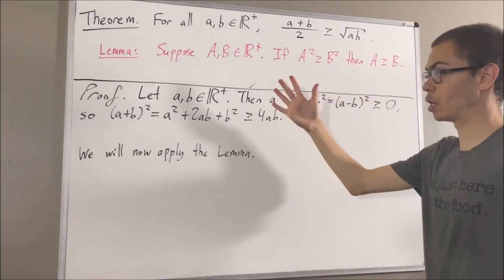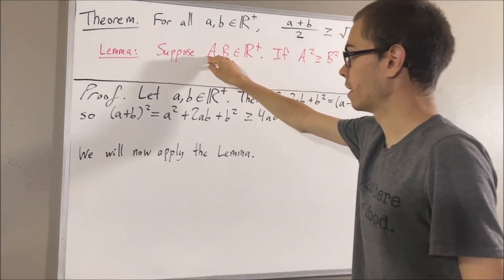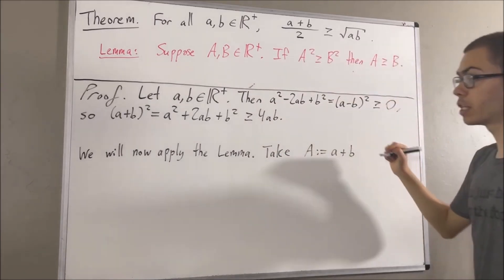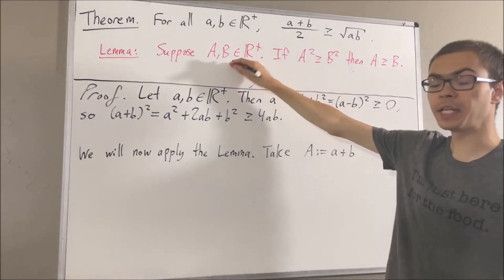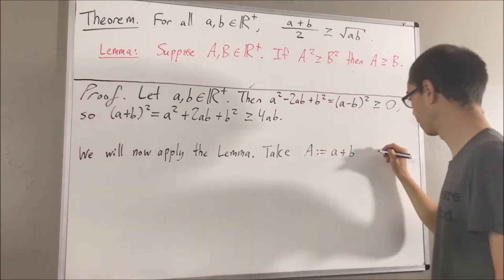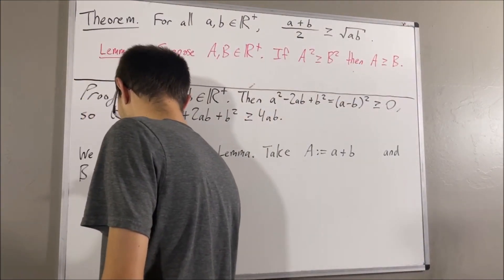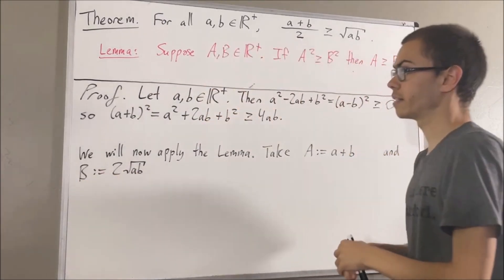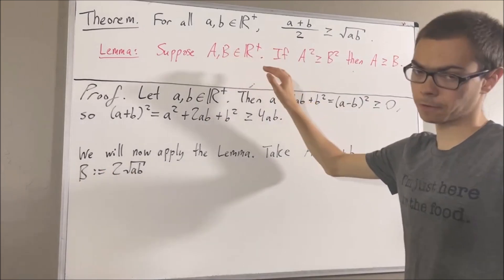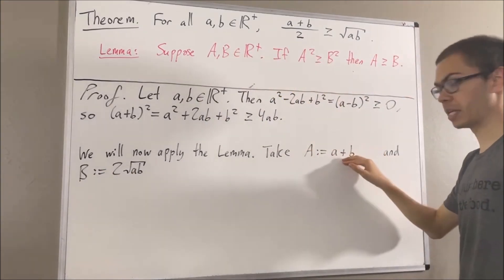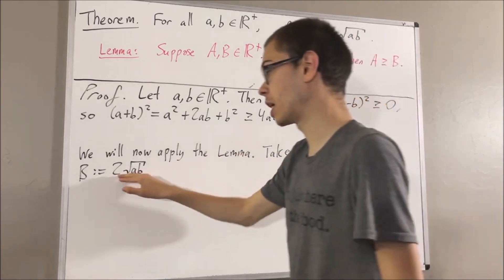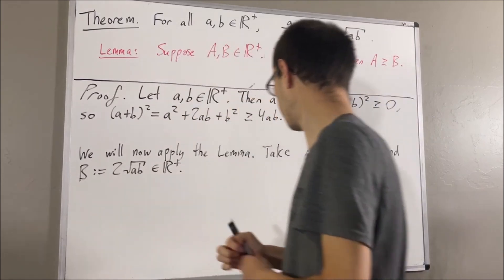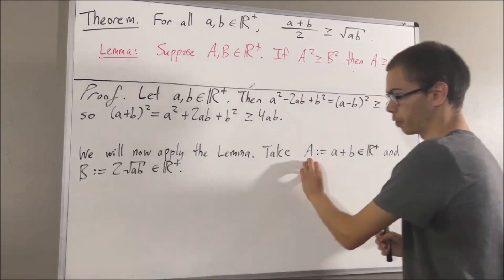Now, in applying this lemma, we're going to take capital A to be a plus b, and we're going to take capital B to be 2 times the square root of a times b. These choices only make sense if they are both positive real numbers. It turns out a plus b is a positive real number, and 2 times the square root of a times b is a positive real number. So, these are valid choices for capital A and capital B.